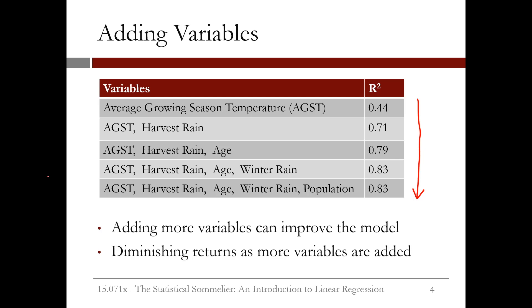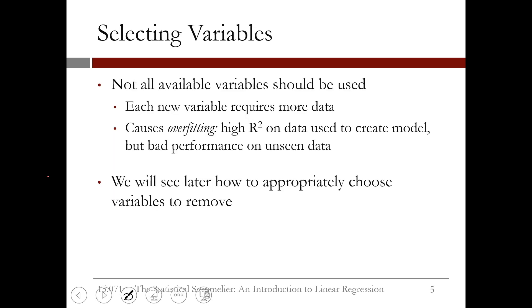So which model should we use? Often, not all variables should be used. This is because each additional variable requires more data, and using more variables creates a more complicated model. Overly complicated models often cause what's known as overfitting — this is when you have a high R² on the data used to create the model, but bad performance on unseen data.